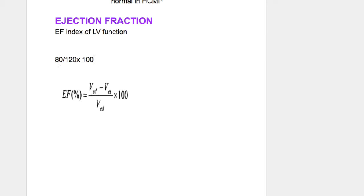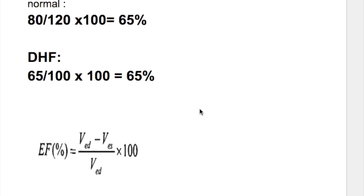Ejection fraction of 55 to 65 percent is normal. In diastolic heart failure and hypertrophic cardiomyopathy and restrictive cardiomyopathy, ejection fraction remains normal, low normal, or slightly reduced. In this example, end diastolic volume is 100 ml in the left ventricle and 65 ml is the stroke volume, which is 65 percent. This amount is reduced compared to normal where it was 120 ml at end diastole, but in diastolic heart failure the ratio between end diastolic volume and stroke volume remains the same, so 65 percent of blood is ejected out — a normal ejection fraction.